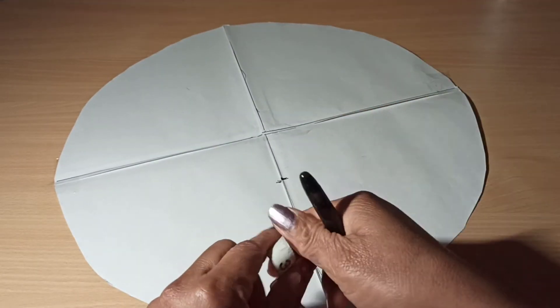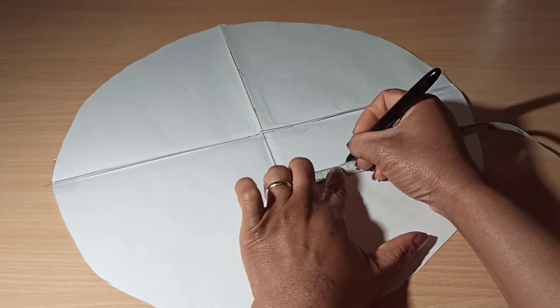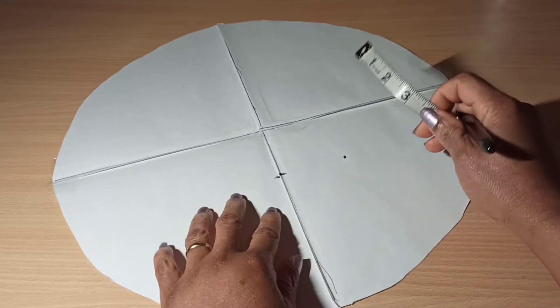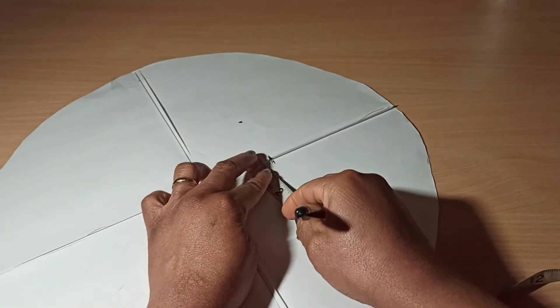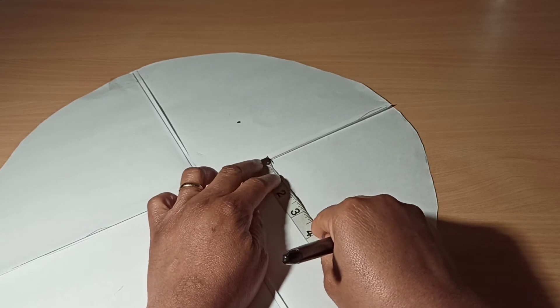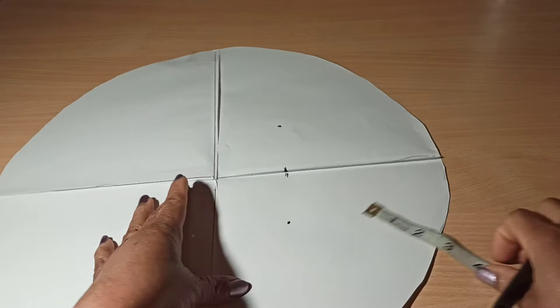Once you make that marking, you want to go on the right side and take another two and a half, make a marking, and go on the left side and make another marking of two and a half inches.